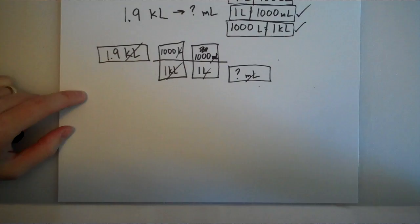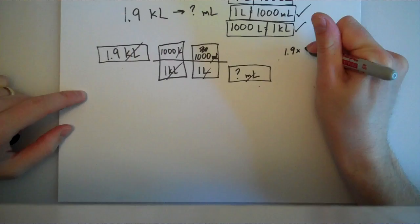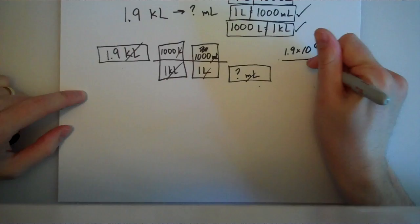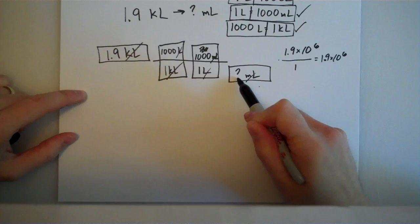Now, it's just plug and chug. So, I pull out my calculator and I say 1.9 times 1,000 times 1,000 is equal to 1.9 times 10 to the 6th. And then on the bottom, we have 1 times 1, which is just 1, which means that 1.9 times 10 to the 6th is my answer. Now, what are the units? Because you have to have a unit. Well, the question mark was for milliliters, so the answer has to be 1.9 times 10 to the 6th milliliters.